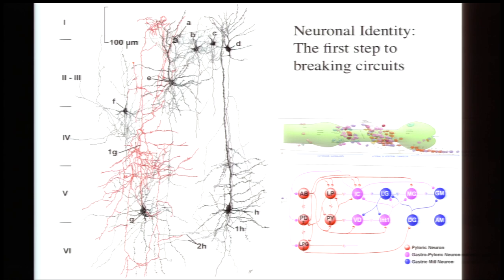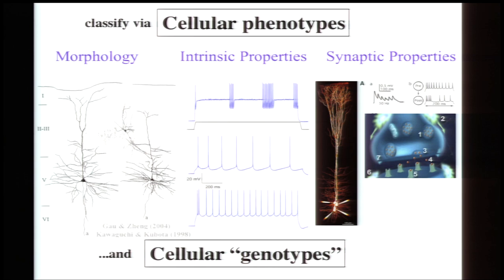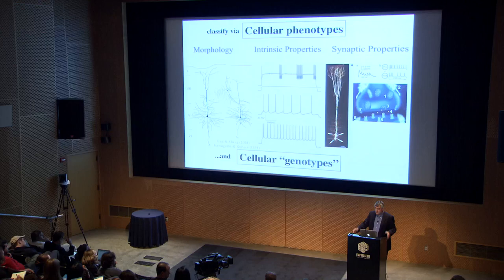In many simple model organisms, there's been tremendous progress in understanding the development and function of circuits because investigators can repeatedly go back to the same identified neurons. That's really what is needed to make progress in understanding circuits like the cerebral cortex. We heard this morning about a program to define the morphology, connectivity, and intrinsic firing properties of all of the hundred or so cellular types in the neocortex. We'd also like to understand how these properties arise from the specific genes expressed in these cells.